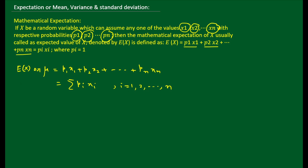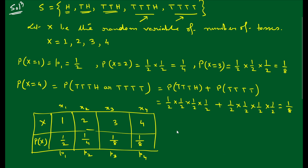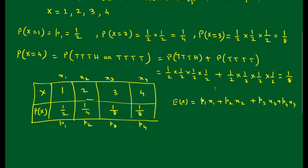For the previous coin-tossing problem, E(X) = P1·x1 + P2·x2 + P3·x3 + P4·x4. Substituting values: E(X) = (1/2)×1 + (1/4)×2 + (1/8)×3 + (1/8)×4. You can calculate this to get the expectation of this particular problem.